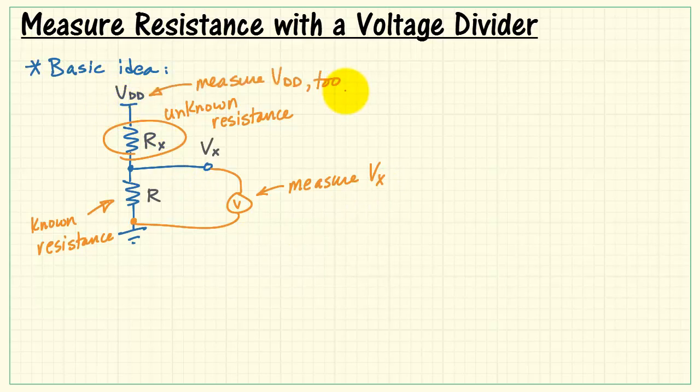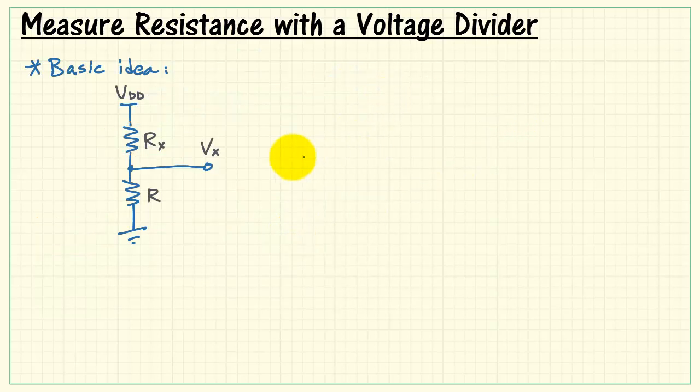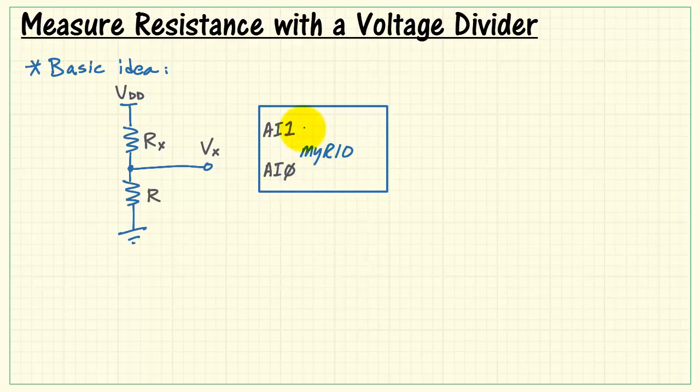You can also measure your supply voltage VDD to improve the accuracy of the overall measurement. This voltage Vx would be applied to one of the analog inputs on MyRio, say analog input zero, and then the other analog input measures your supply voltage VDD.